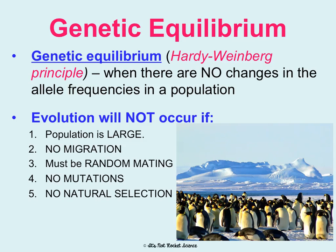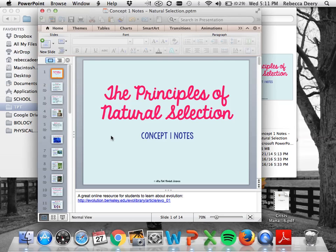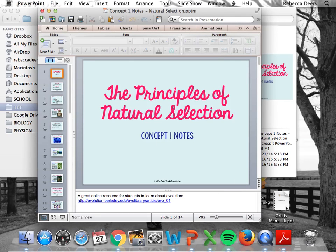The purpose of listing these conditions is that it's really, really, really hard to meet all five of them. Pretty much in any situation, you'll see that one of these conditions is being violated. Thus, that means that evolution is probably occurring in some way, even if we can't see it. And that is Concept One notes for CP students.